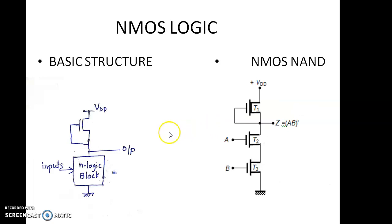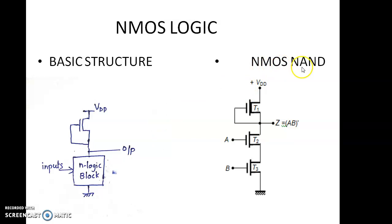Next, NMOS logic. Here its gate is connected, and inputs are connected to the N logic blocks. From here we will get the output. This is the basic structure of NMOS logic. For example, NMOS NAND: A·B all bar. For NMOS, multiplication means series, so A and B are connected in series. This is NMOS NAND.